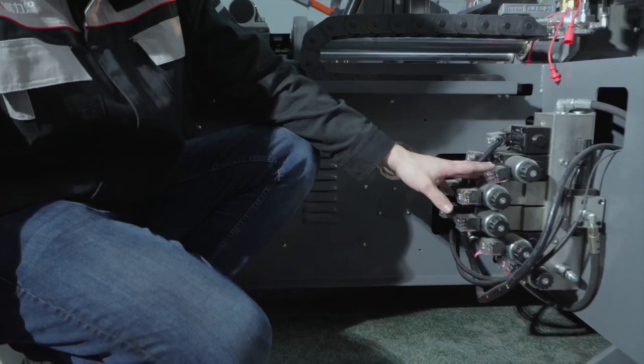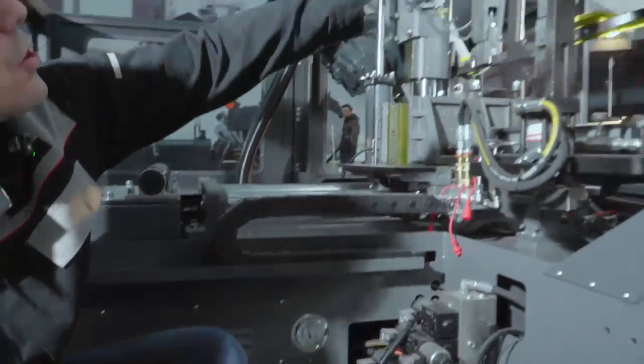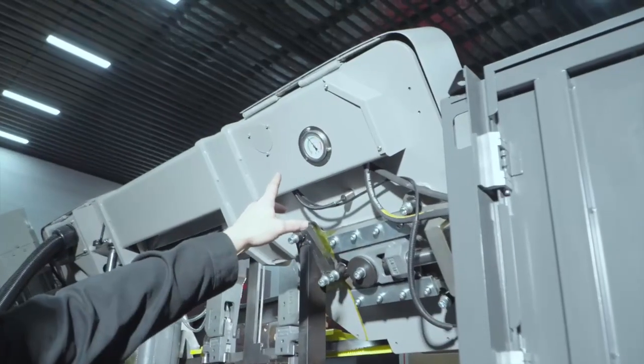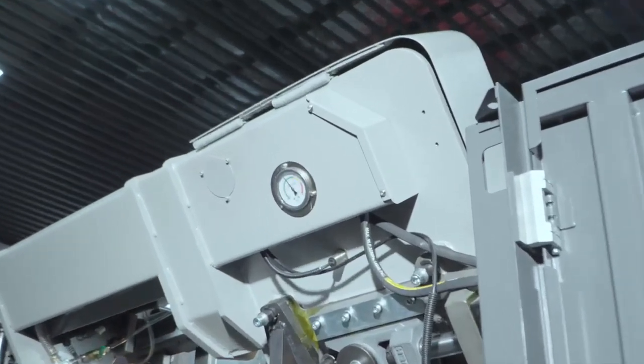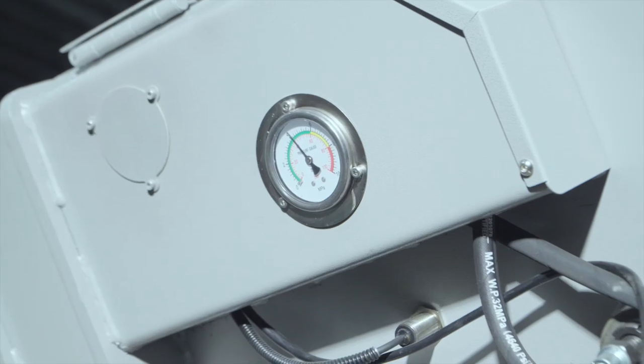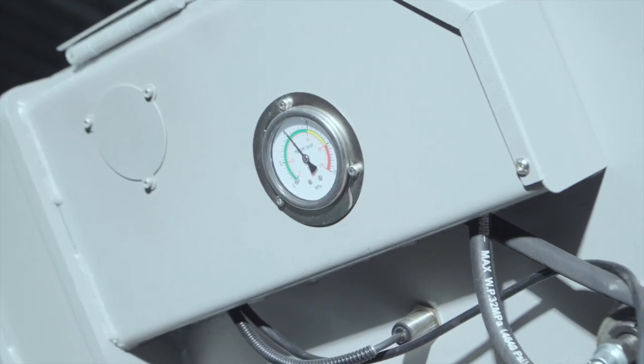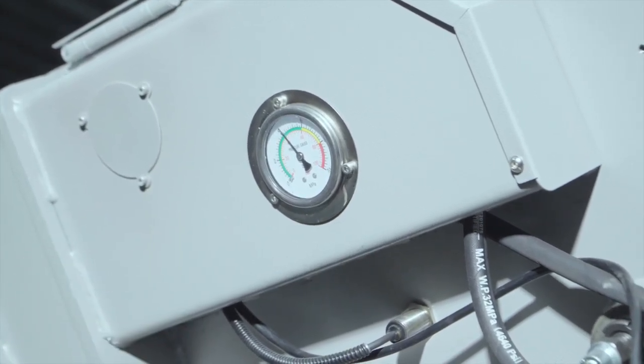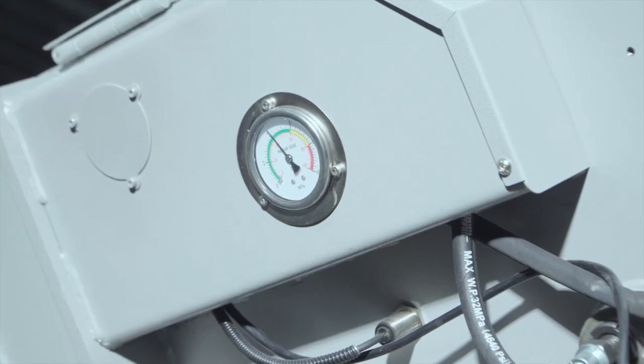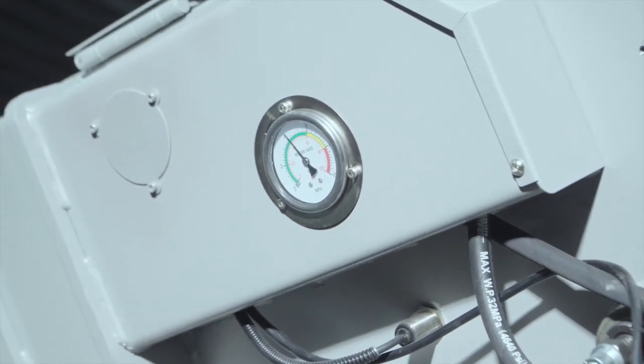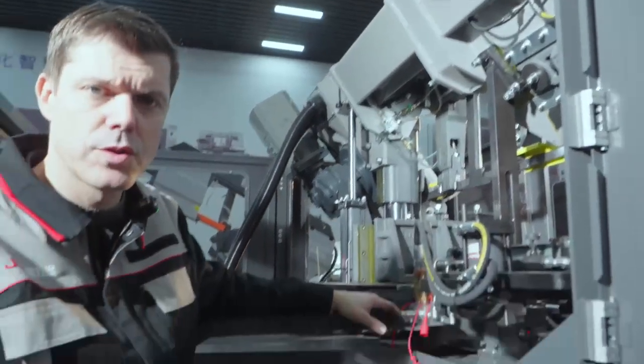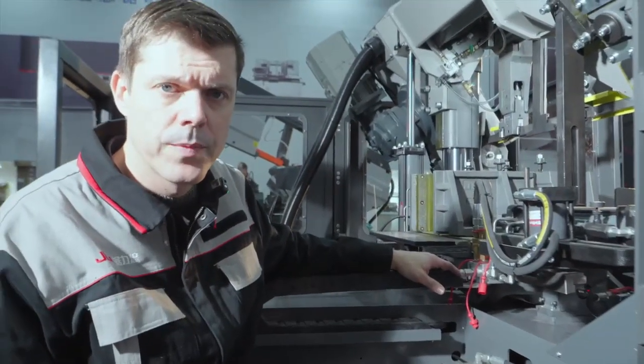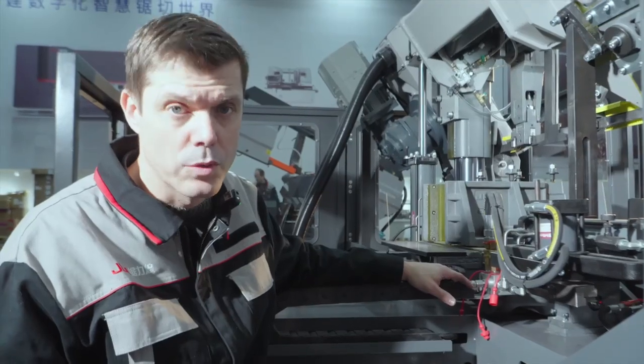Something else that I want to point out is the tension gauge here. You can read the tension on the back of the saw. It's something that is on all our H-Pro series and also the Pro Plus series. So you can read the tension of the tension cylinder for the blade tension on the back side of the machine. So let's take a look at the electrical cabinet and on the control system.